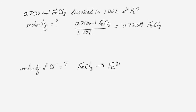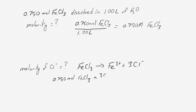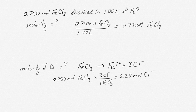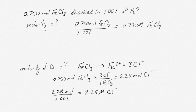So what's really happening in solution is FeCl3 is splitting up into Fe3+ ions and 3 chloride ions. So for every 1 mole of iron chloride, you end up with 3 moles of chloride ion. So we have a mole ratio. So what we can do is we can say 0.750 moles of FeCl3 times 3 chloride ions for every 1 FeCl3 gives us 2.25 moles of chloride ion.